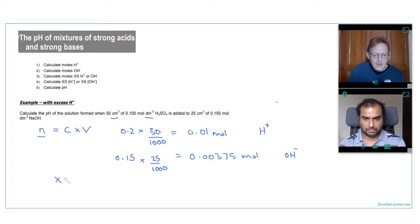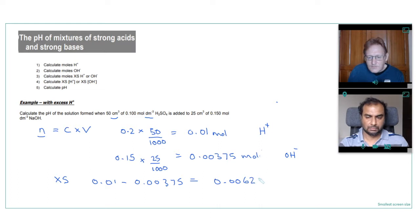And you can see the hydrogen ions is in excess. So 0.01, take away 0.00375. And that would give us 0.00625 moles of hydroxide ions in excess. Oh, sorry. Moles of H plus ions in excess. Just because the hydrogen ions are more. Yeah, exactly.